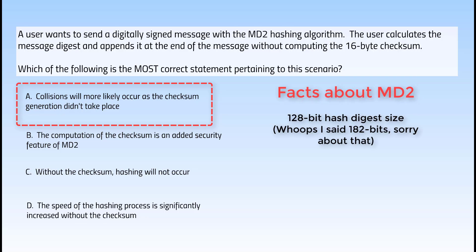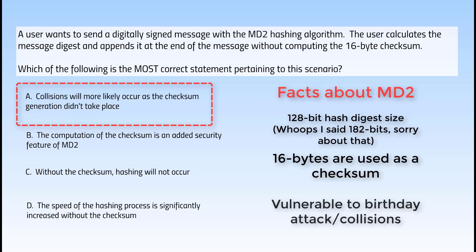In the MD2 hashing digest, the plain text that is converted to a hash has a 128-bit value. Of these 128 bits, there is a 16-byte checksum added to the end. It has been found that if you don't add this padded 16-byte checksum at the end of the hash, the algorithm is vulnerable to a birthday attack — which is predicting collisions of the same hash being generated from the same plain text. That's bad for cryptography.